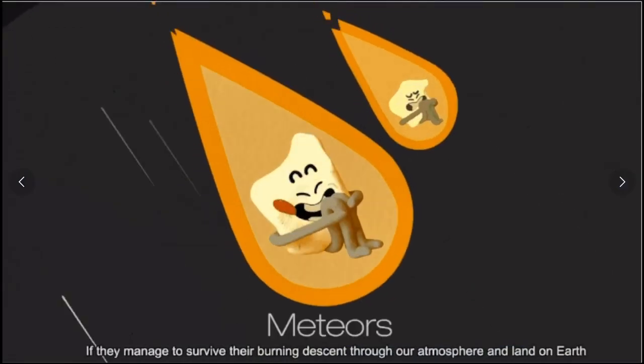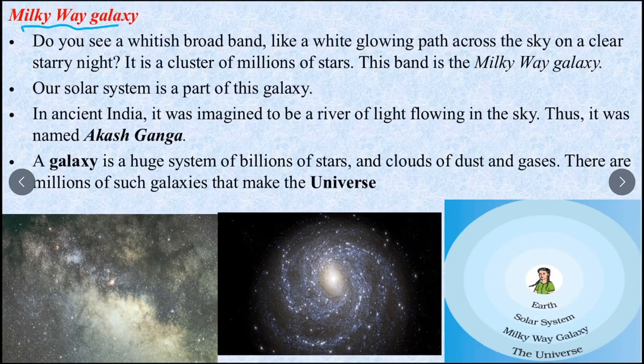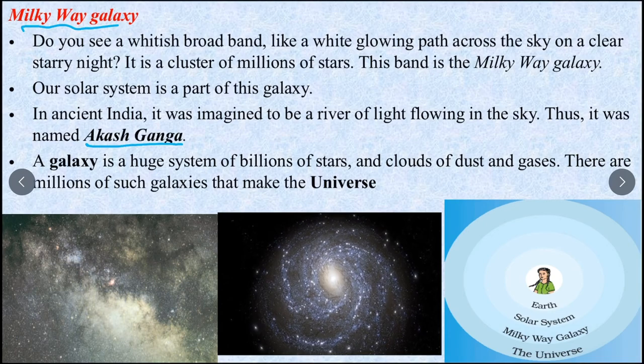During this process, due to friction of air, they heat up and burn. When they enter the atmosphere and burn, we call them meteors. If they reach the surface of Earth, we call them meteorites. This is the illustration - this is the atmosphere, meteorites entering at high speed.